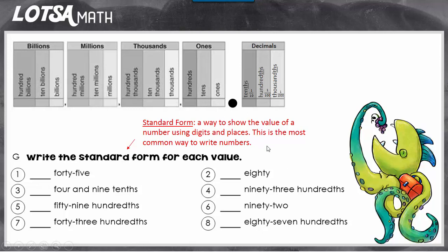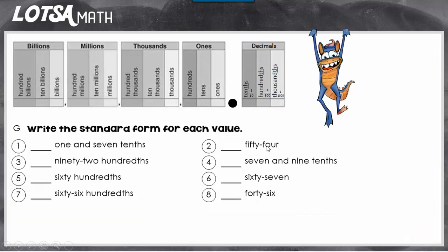So let's look at some examples on how to change a word form into a standard form. Let's look at number one. It says one and seven tenths. Any time you see the word 'and' in a number, that is where a decimal is going to go. The words in front of 'and' are going to be the whole values, and the words after 'and' are going to be the decimal values.